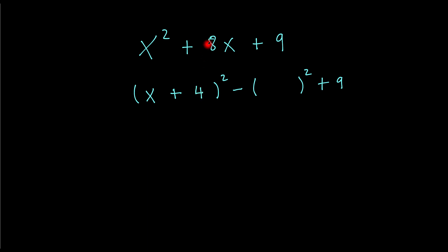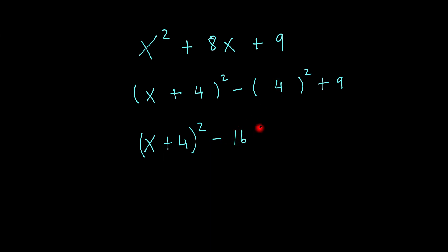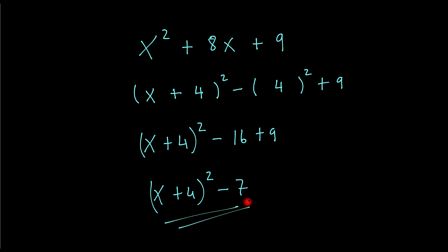Place the 4 in here as well. So then you just say x plus 4 all squared, and then you have minus — so that 4 squared will be 16, plus 9. The final answer will be x plus 4 all squared, and minus 16 plus 9 will be minus 7. And that would be my final answer.